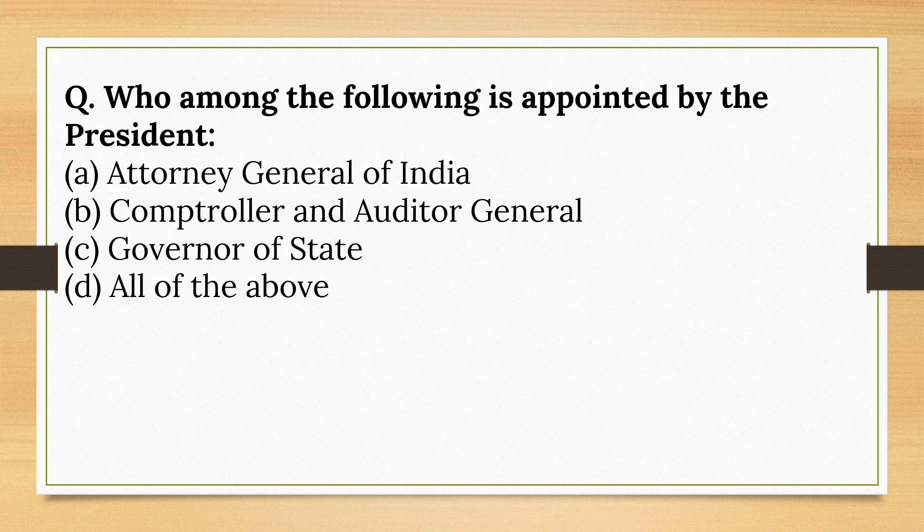Who among the following is appointed by the President? The Attorney General of India, the Controller and Auditor General, and the Governor of a State are all appointed by the President. So the correct option is all of the above.